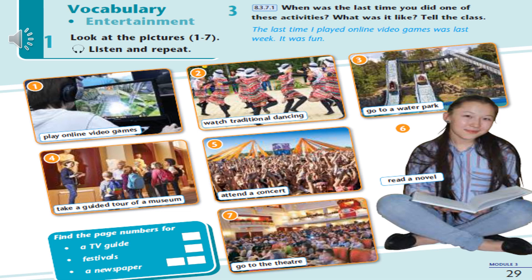Таким образом, вам следует составить с каждым словосочетанием, которые даются здесь под картинками, такие предложения. Обязательно нужно написать сначала полноценные предложения. Можете начинать как в примере: 'The last time I took...' В прошедшем времени пишем, Past Simple используя. 'A guided tour of a museum was...' — тоже прошедшее время. Например, можете писать 'last month'. Прошлый месяц. 'It was very interesting.' Примерно так составляем свои предложения.